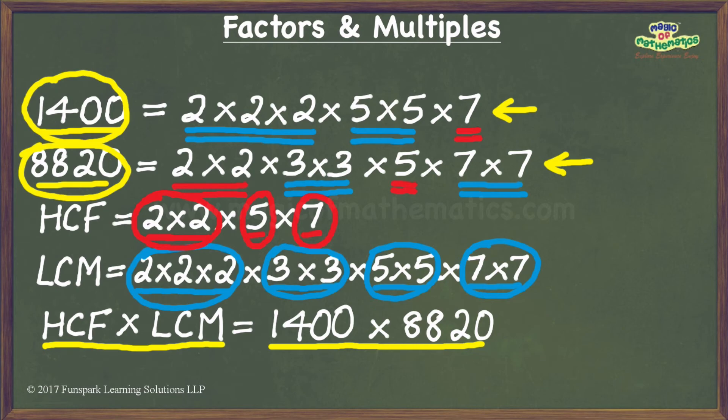Hence, when we multiplied the prime factorizations of the LCM and HCF of the given numbers, for each prime factor we ended up with their occurrences in the prime factorizations of both the numbers. This resulted in us getting a result equal to the product of the given numbers. It is easy to see that this logic would apply no matter what numbers we choose, and hence the product of the HCF and LCM of any two numbers equals the product of the given numbers.